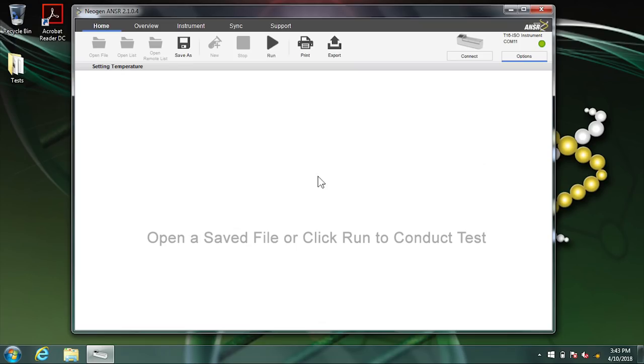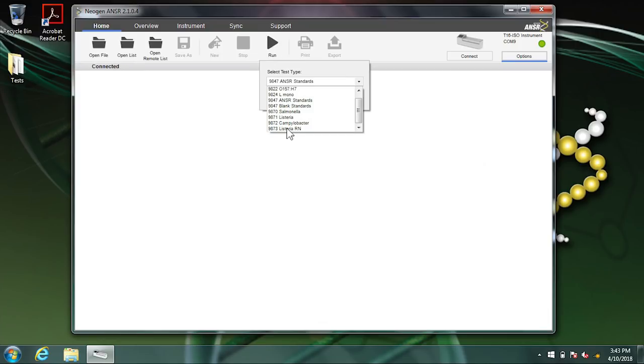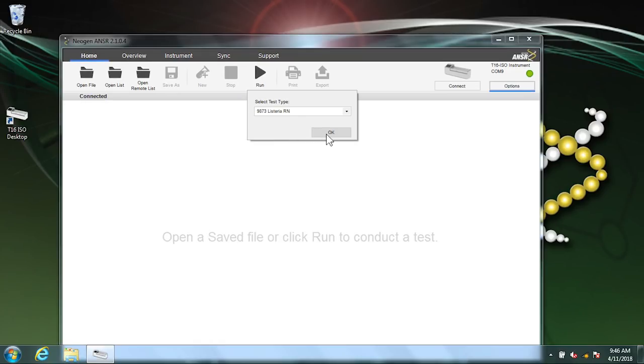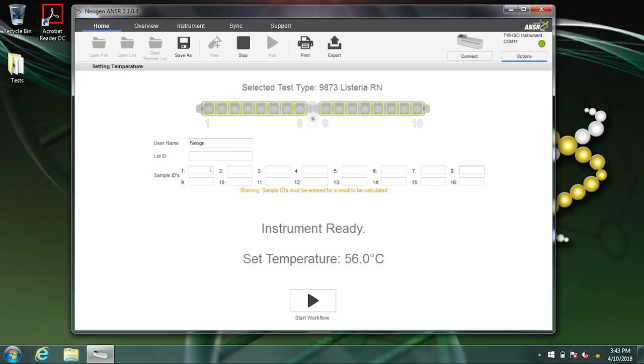Remove your gloves and from the computer, select Run. Select 9873 Listeria RN from the Test Type drop-down menu, then click OK.